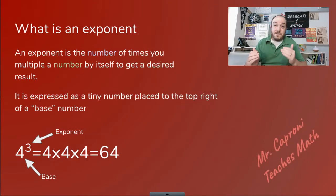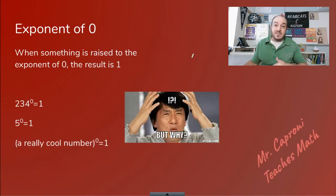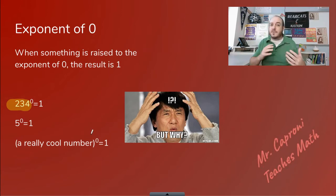At this point, we're going to move on to some funky rules that come from exponents. Starting off, exponent of zero. Whenever a number is raised to the exponent of zero, like for example, 234 to the zeroth power, the answer is always just one. So if I do 234 to the zeroth power, one. If I do five to the zeroth power, one. If I do any really cool number to the zeroth power, the answer is one. That's just a rule of exponent.